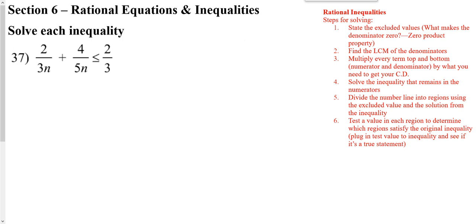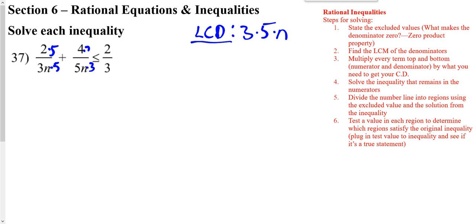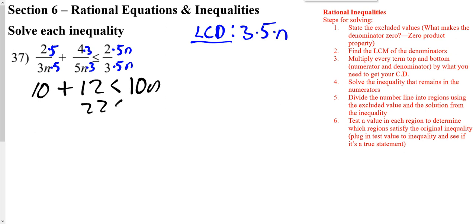So we need to start off by finding our LCD. Everything's already factored. We have a 3, a 5, and an N showing up. So we need to get each fraction to have that LCD. This one needs a 5 top and bottom; this one needs a 3 top and bottom; this one needs a 5N top and bottom. Now I can just work with the tops: 2 times 5 is 10, plus 4 times 3 is 12, less than 2 times 5 is 10N. I get 22 is less than 10N, and solving that I get 2.2.